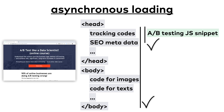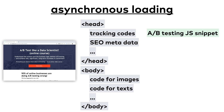And that also leads to flickering — your user will see your original version A first, then it changes to version B. Not a good user experience. How can you fix this? Firstly, NOT by setting your code from asynchronous to synchronous. That's a common mistake that I see, and you should not do that. Changing your JavaScript snippet to load synchronously will slow down your website, and you don't want that.